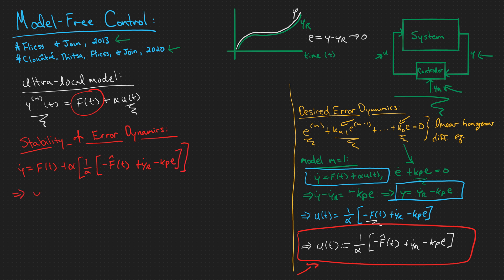And this implies that y dot is equal to f of t minus f hat of t plus y sub r dot minus kp e. And I can rearrange this equation so that I have e dot plus kp e is equal to f of t minus f hat of t. Now notice that if this term right here is close to 0, then I have that homogeneous linear differential equation that I talked about earlier that we wanted.